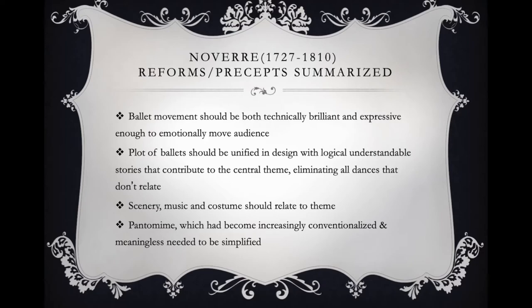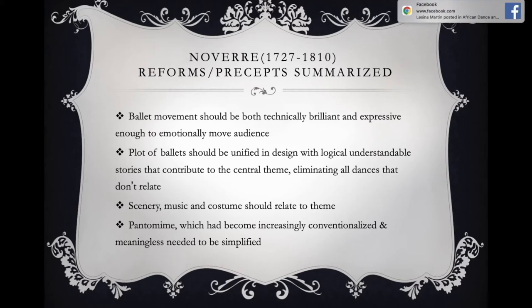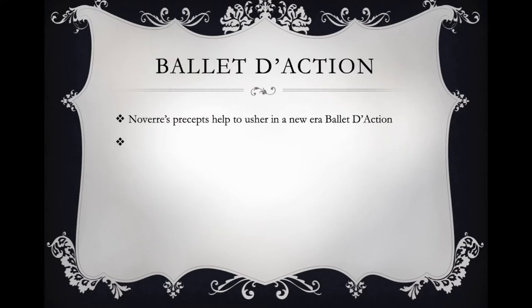Noverre — born in 1727 — came with revolutionary ideas: ballet movement should be both technically brilliant and expressive enough to emotionally move the audience; the plot should align with everything else — scenery, music, costumes should all relate; and the pantomime needed to be simplified. Noverre had been on tenure at the Royal Academy but lost that tenure due to these revolutionary ideas, though the ideas themselves are still used today.